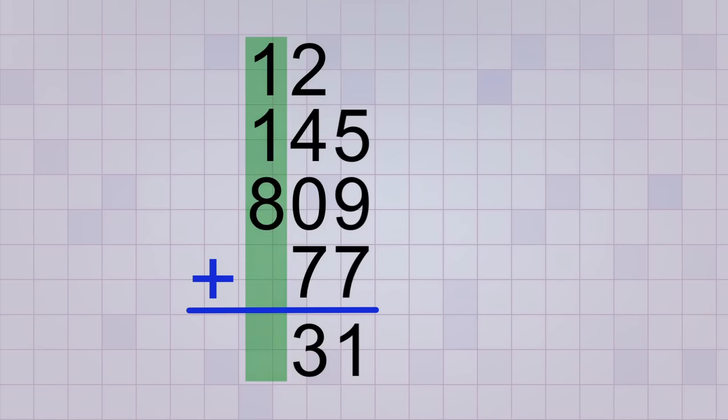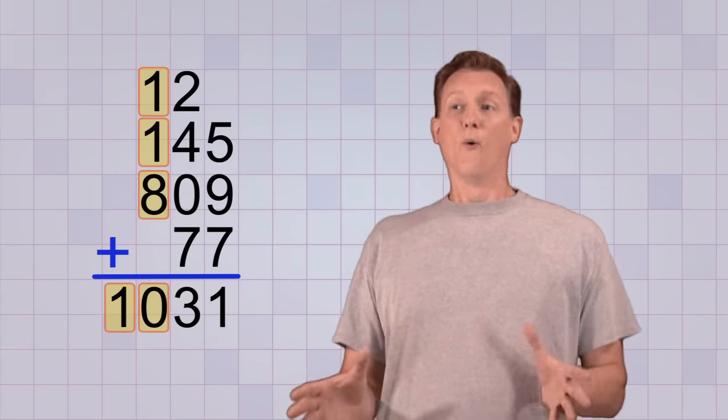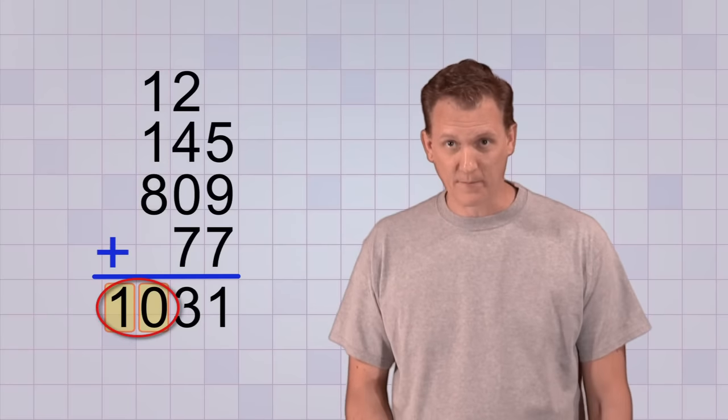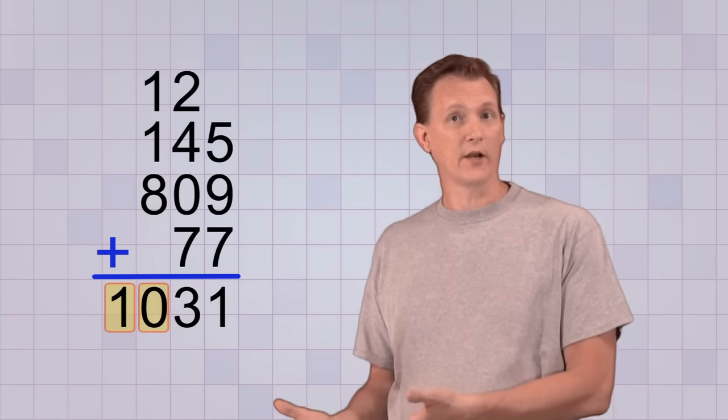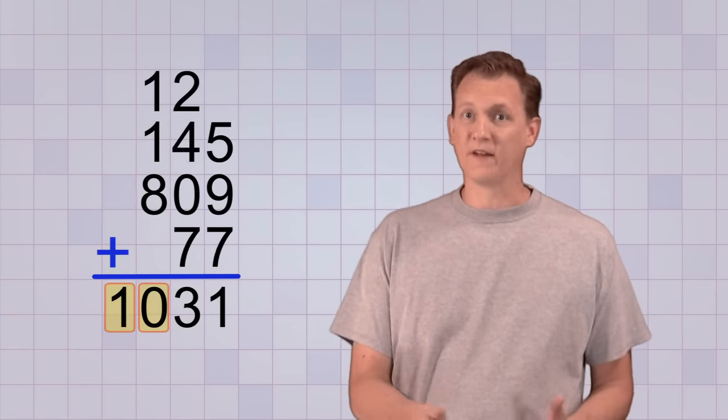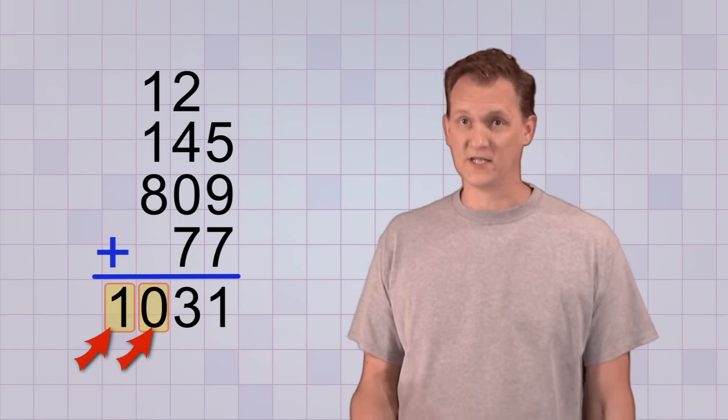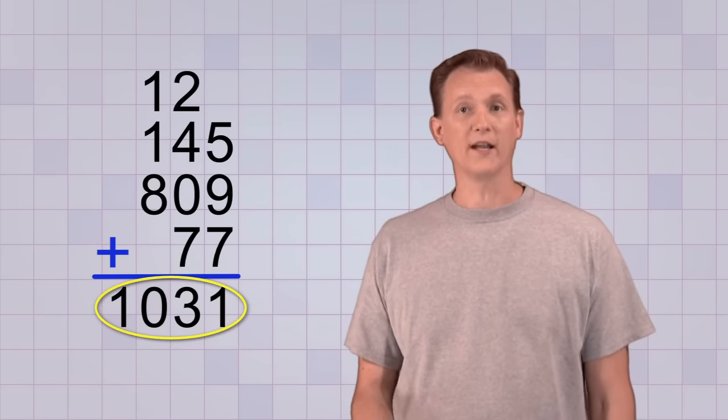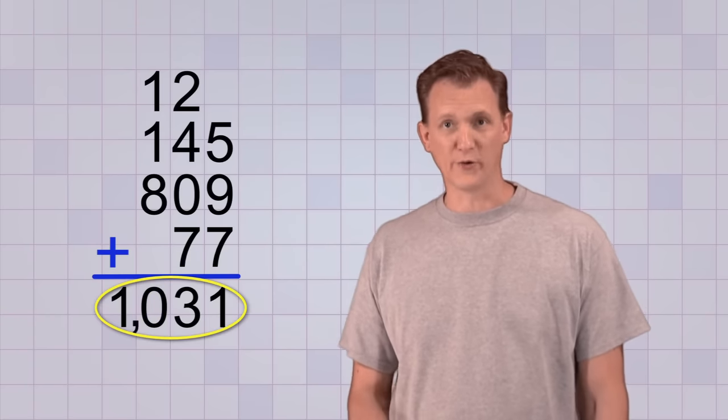Last, we add the hundreds place column. 1 plus 1 plus 8 equals 10. Wow! Another 2-digit number! But this time, we don't need to carry because there's no more columns left to add. So we won't be getting in the way of any answers by leaving both the digits in the answer like this. So our answer is 1031.